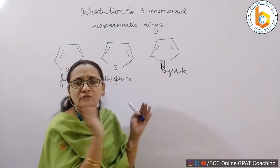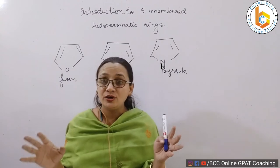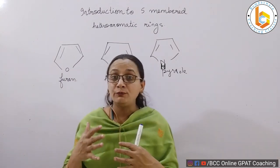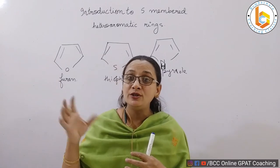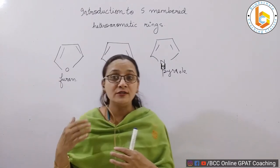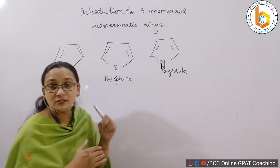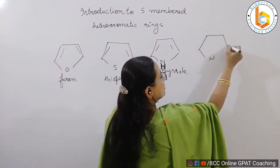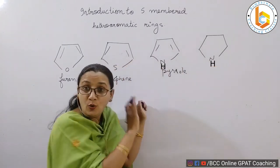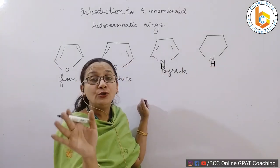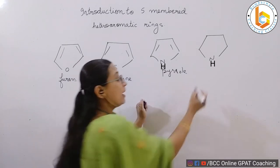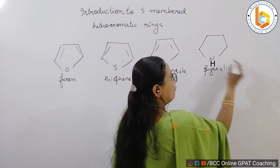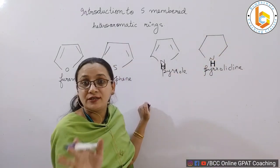Most heteroaromatic compounds found in nature contain nitrogen, so we have to put a lot of focus on nitrogen-containing rings rather than on oxygen and sulfur. Now, if pyrrole — a five-membered ring containing nitrogen — has no aromaticity, then you call such a ring pyrrolidine. A five-membered ring containing nitrogen without any aromaticity is referred to as pyrrolidine.